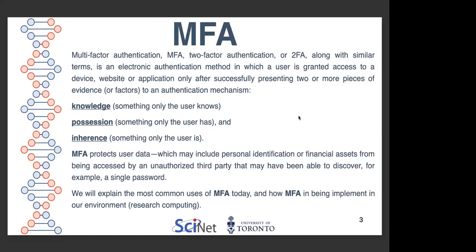The different factors are, for example: knowledge — something that only the user knows; possession — something that only the user has; and inherence — something that only the user is. MFA protects user data, which may include personal identification or financial assets, from being accessed by an unauthorized third party that may have been able to discover, for example, a single password.